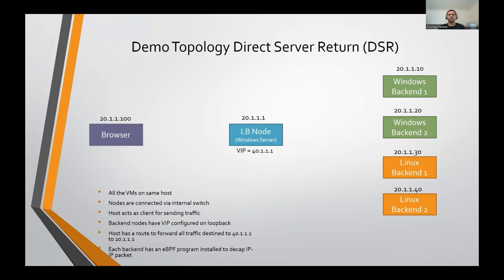This slide shows the topology for DSR, which is similar to SNAT but with a few differences. In DSR, the packet is IP-in-IP encapsulated on the LB node, so the back-end node receives an IP-in-IP packet and needs to de-encapsulate it. We need some eBPF program on the back-end to de-cap those packets. For Windows back-end servers in this demo, we are using an XDP eBPF program to de-cap the IP-in-IP packets. For the Linux back-end servers, we are using a TC-based eBPF program.